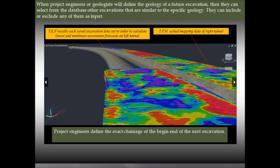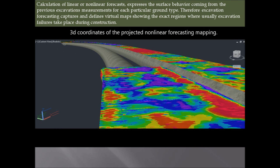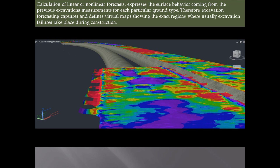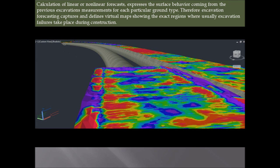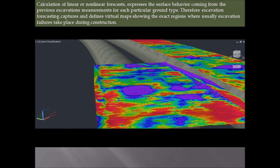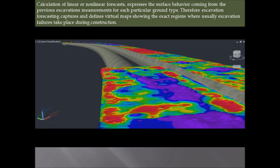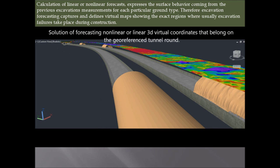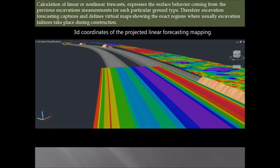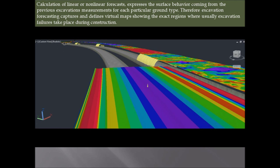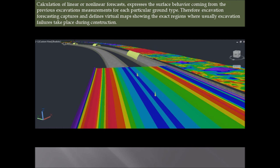Project engineers define the exact chainage of the begin and end of a future excavation. At the same time, you can see the actual mapping data provided by TPM on the right tunnel. What you see now on the left tunnel shows the different cases of potential forecasting maps, where the excavation behavior is expressed through different classification types of measured geologic excavation regions as defined by geologists and measured by surveyors. Calculation of linear or non-linear forecasts expresses the surface behavior coming from previous excavation measurements for each particular ground type.